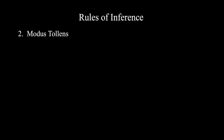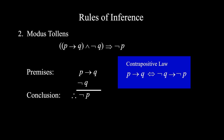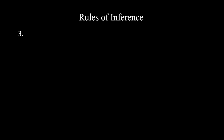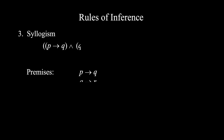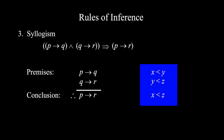Two: Modus Tollens — p implies q, and not q, therefore not p. Recall the contrapositive law (click here for the laws of logic; the link is also in the description below): p implies q is logically equivalent to not q implies not p. Use this law and the rule of modus ponens to get modus tollens. Three: Syllogism — p implies q, and q implies r, therefore p implies r. You can associate this with: x smaller than y and y smaller than z, therefore x smaller than z. This rule is also known as the transitive rule.